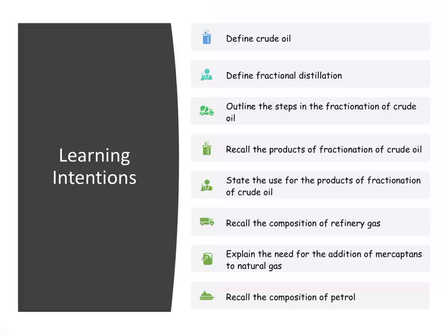In fuels and heats of reaction, we're going to be looking at crude oil: what it's comprised of, how to separate it, the various products that we obtain from crude oil, what they are used for, with a note to looking specifically at refinery gas, the composition of petrol, and we will discuss why we need to add mercaptans to natural gas.